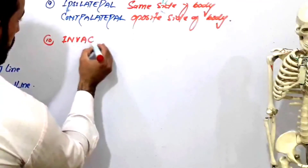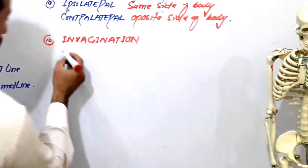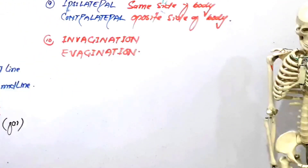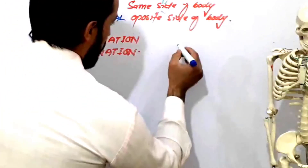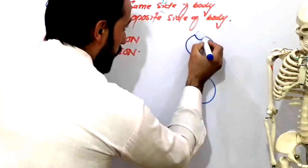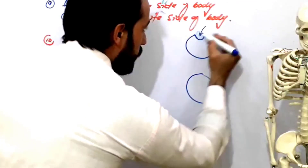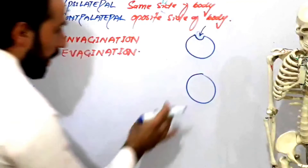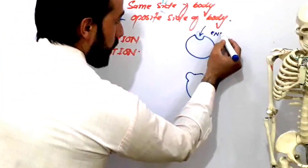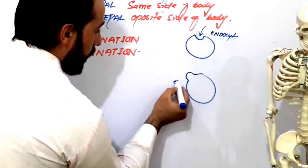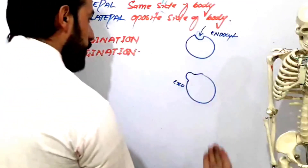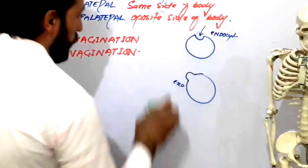The next pair is invagination and evagination. Here is a cell membrane: when a portion folds inward into the cell, this is called invagination, and it occurs during endocytosis. When it folds outward, this is called evagination, and it occurs during exocytosis. So invagination means inward folding and evagination means outward folding.